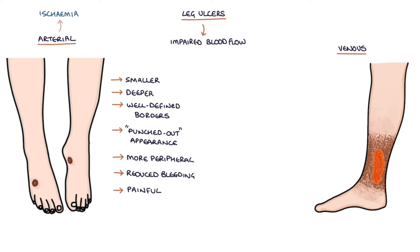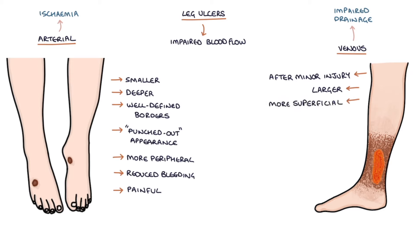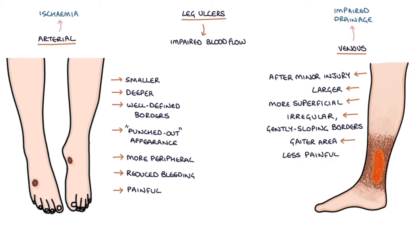Venous ulcers are caused by impaired drainage and the pooling of blood in the legs. Typically, they occur after a minor injury to the leg. They're larger and more superficial than arterial ulcers, have an irregular gently sloping border, affect the gaiter area of the leg from the mid-calf down to the ankle, are less painful than arterial ulcers, and occur with other signs of chronic venous insufficiency, for example haemosiderin staining and venous eczema.